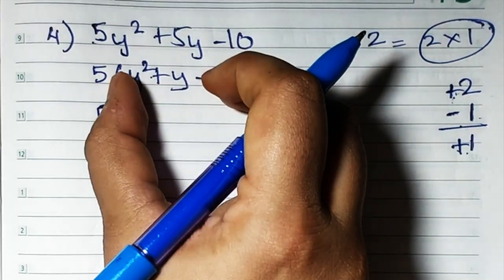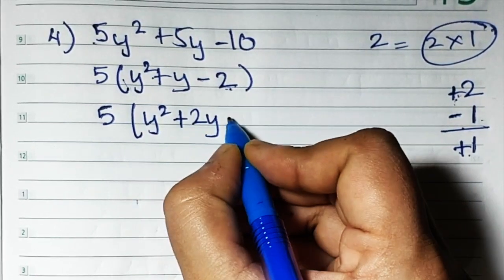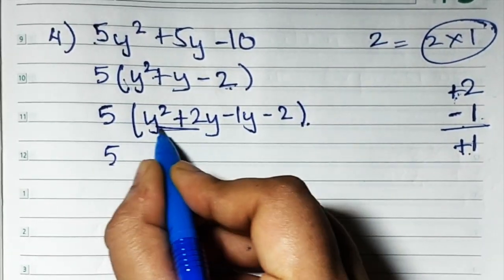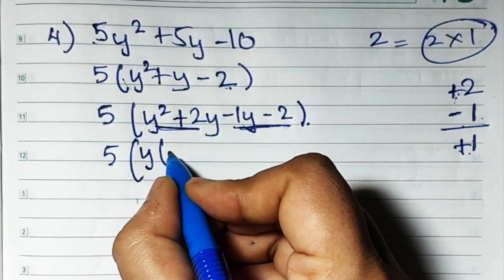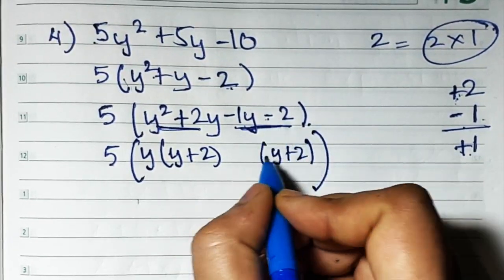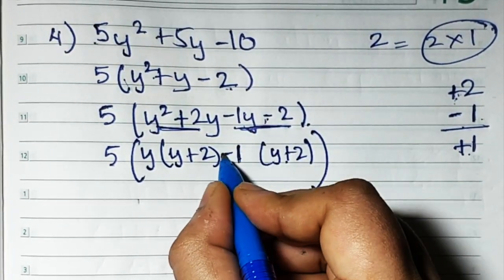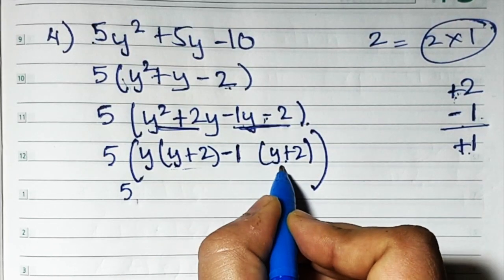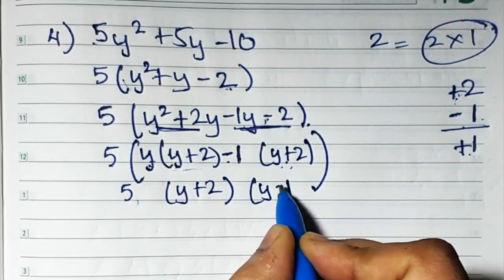So now just look at this. Keep the 5 out as it is. I'm writing the middle term, breaking the middle term: y squared plus 2y minus 1y minus 2. Now 5 remains out. This is one group and this is one group. Y is outside. What remains in? y plus 2. I want y plus 2 in the other bracket also. But this is y minus 2 and there's nothing common, so 1 comes out common. If I want plus and it is minus, I take minus out. So now what we have: 5 common outside, y plus 2 in one bracket, and y minus 1 forms the other bracket.